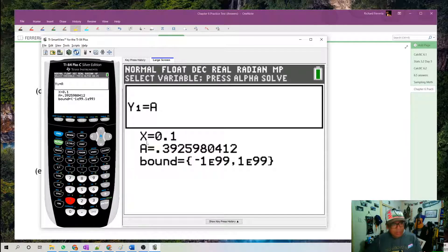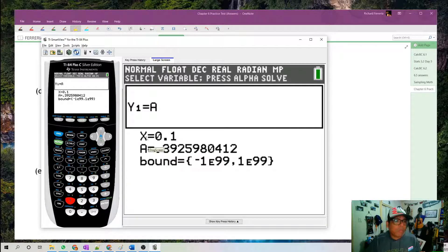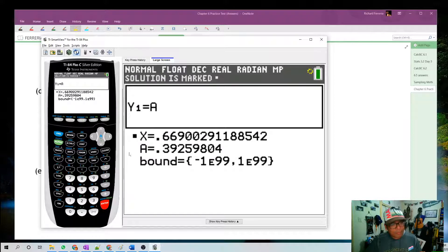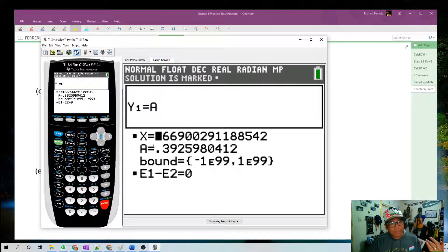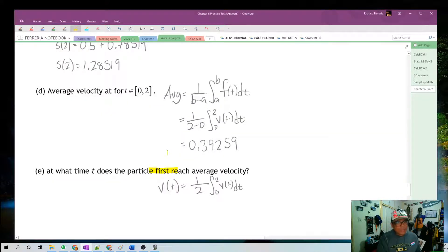So let's put 0.1. And that tells the calculator, start looking around 0.1. Push alpha, enter. And I get 0.669. So that is the closest solution to 0.1. So that must be the first one. I mean, there's no solution between 0.1 and 0. Otherwise, it would have shown up here. So I'm pretty confident this is it. 0.669. So this happens when t equals 0.669.